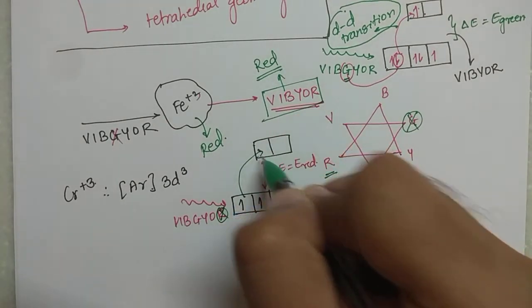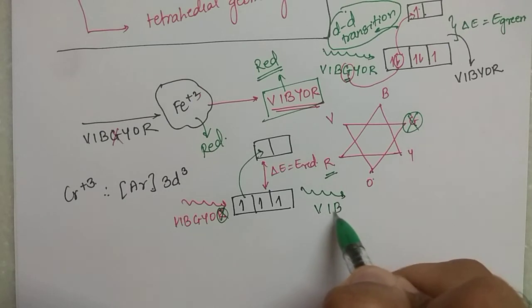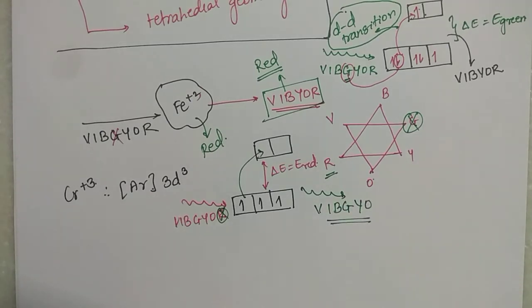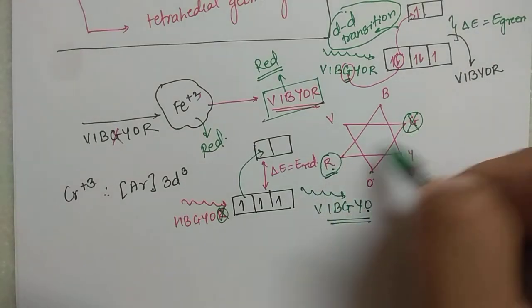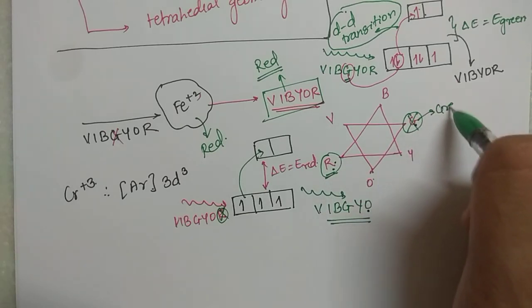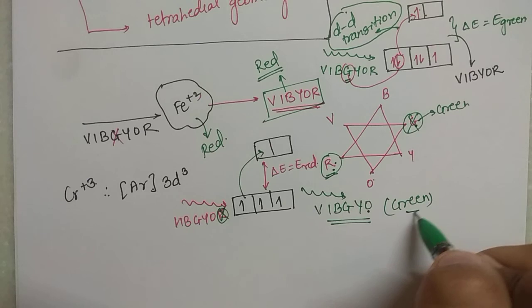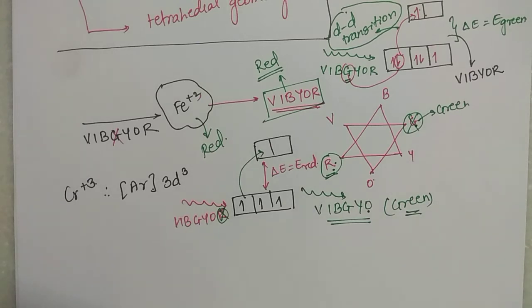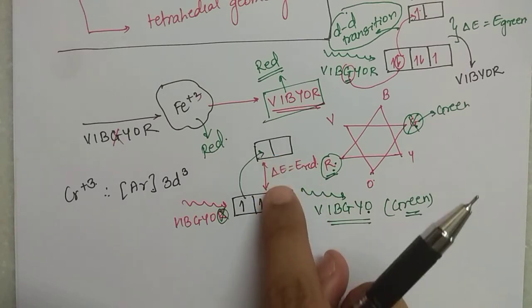If red is absorbed, the light coming out is a combination of V, I, B, G, Y, O — that is violet, indigo, blue, green, yellow, and orange. This combination appears green. So Cr³⁺ will appear green to you. This is how, due to d-d transition, d-block ions are colored.